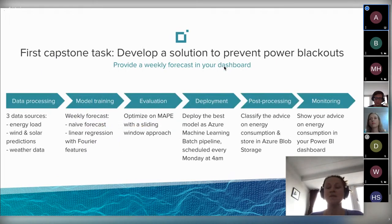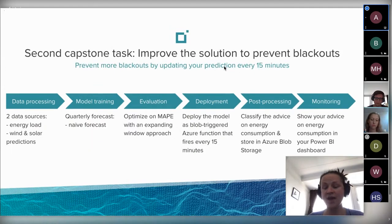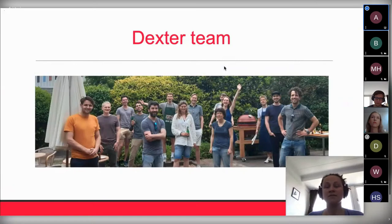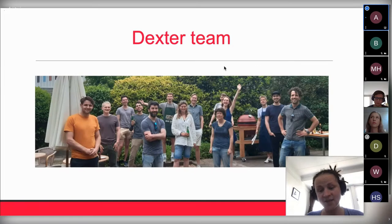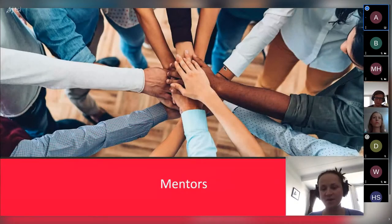There were two steps. First, develop a solution to prevent power blackouts by forecasting what can be done during the week. Second, add more granularity to show what they can do in the next 15 minutes. We're very thankful to the whole Dexter team — especially Inge and Martia — for providing this use case.